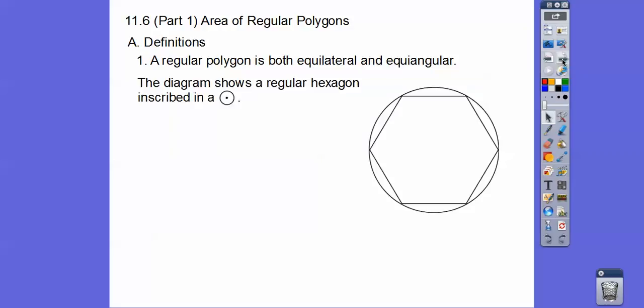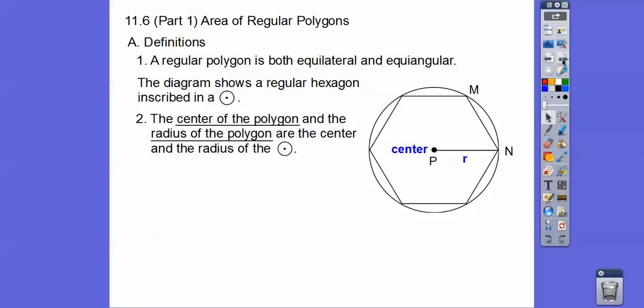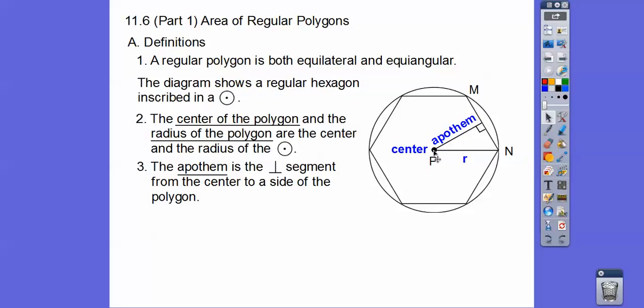Here we have a regular hexagon that's inscribed in this circle right here. So the center of this polygon and the radius of this polygon is the same as the center and radius of the circle. As long as your regular polygon is inscribed in a circle, then the centers are the same and so are the radii. The apothem is like the altitude of the isosceles triangle. Imagine if I drew this radius right here. This radius is congruent to this radius, so we'll make an isosceles triangle and this would be the altitude. And it bisects this base. So this side equals this side right here.